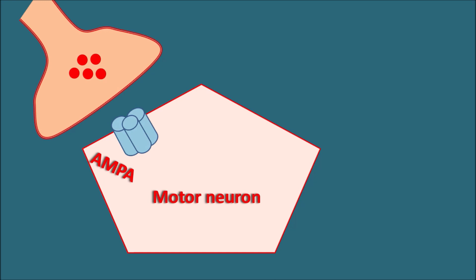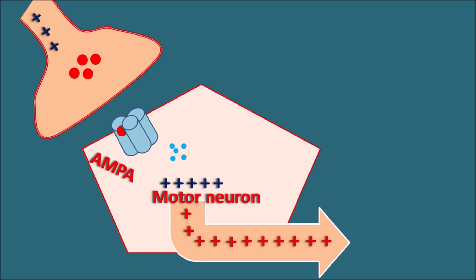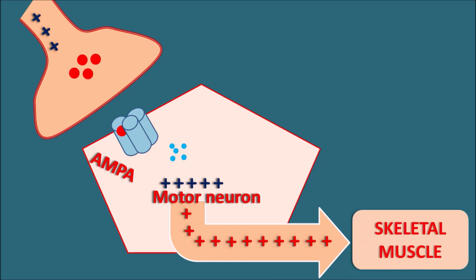When impulses reach the corticospinal neurons, they release the important mediator glutamate, which binds to AMPA receptors. Since these are ionotropic receptors, they allow ions like sodium to enter. This sodium produces depolarization of the motor neuron, and this depolarization is transmitted through the motor neuron to the skeletal muscle, causing contraction. In this way, glutamate plays an important role in skeletal muscle contraction.